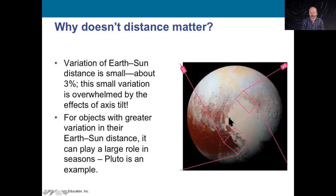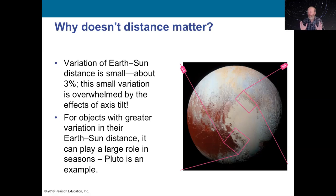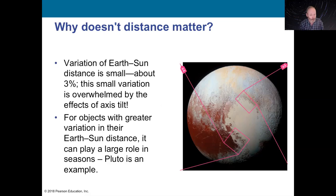Our orbit is very close to a perfect circle — only about 3% variation — so tilt is far more significant than distance. On the other hand, Pluto has a much more egg-shaped orbit. I belong to a Facebook group called 'When I Was Your Age, Pluto Was a Planet' — and that's true. I was actually in my 30s when Pluto was demoted.